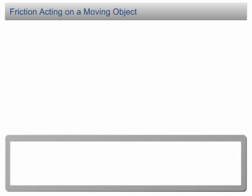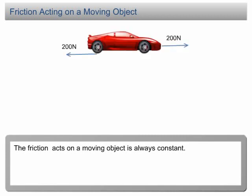Friction acting on a moving object is always constant. For example, when the forward thrust of 200N is acting on a moving car, the friction is 200N.